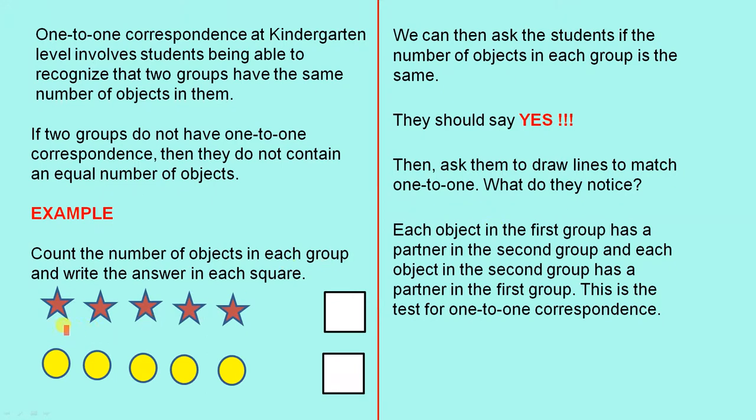In other words, you would be asking them to draw lines from an object in group one to an object in group two, just like that. And then you ask them what they notice.